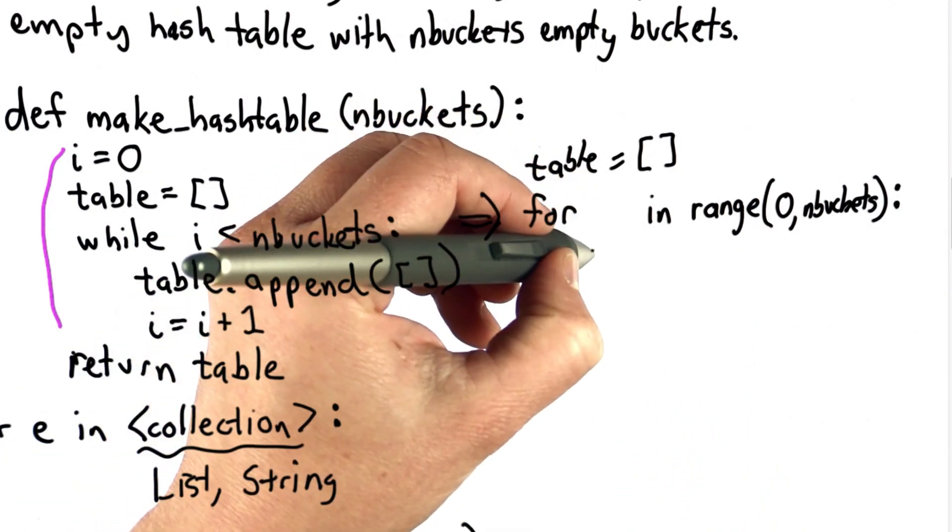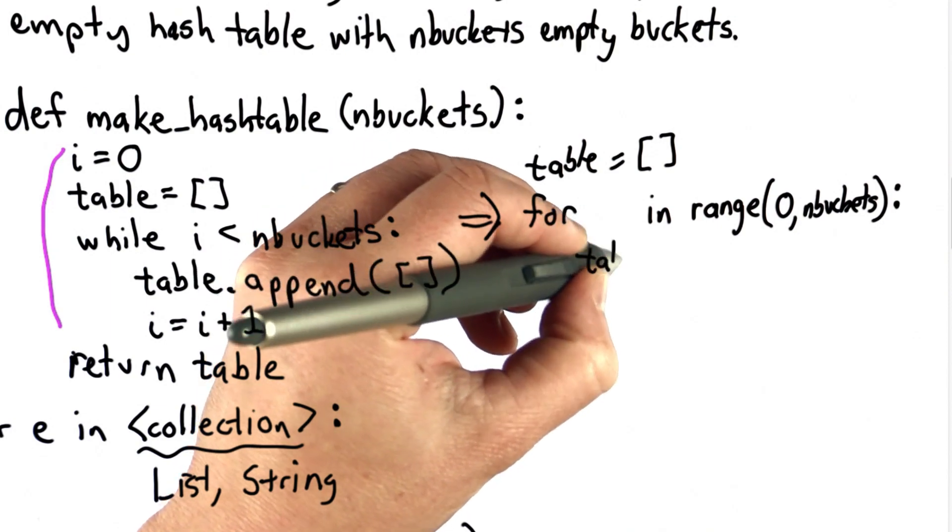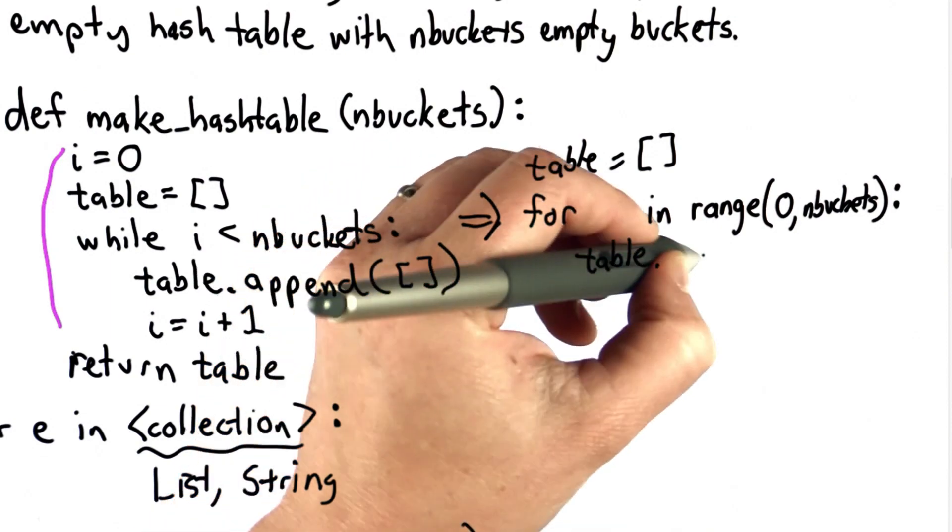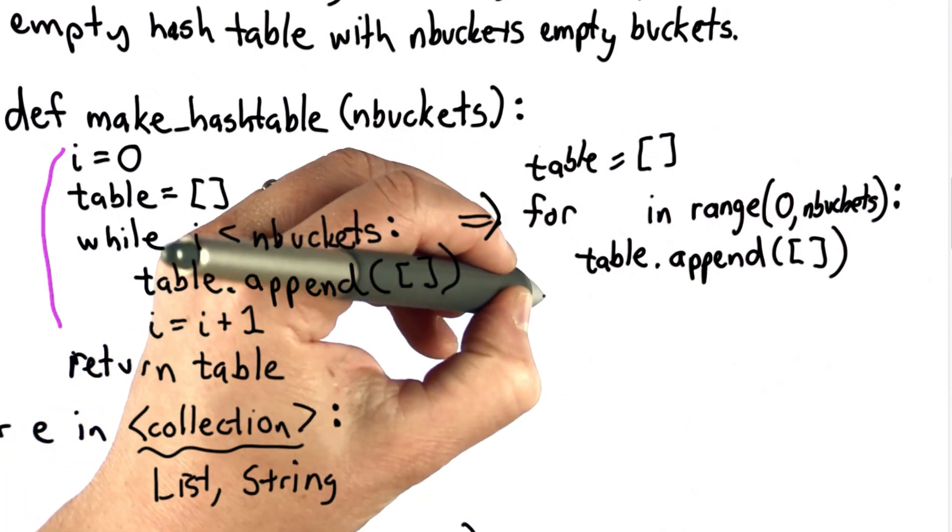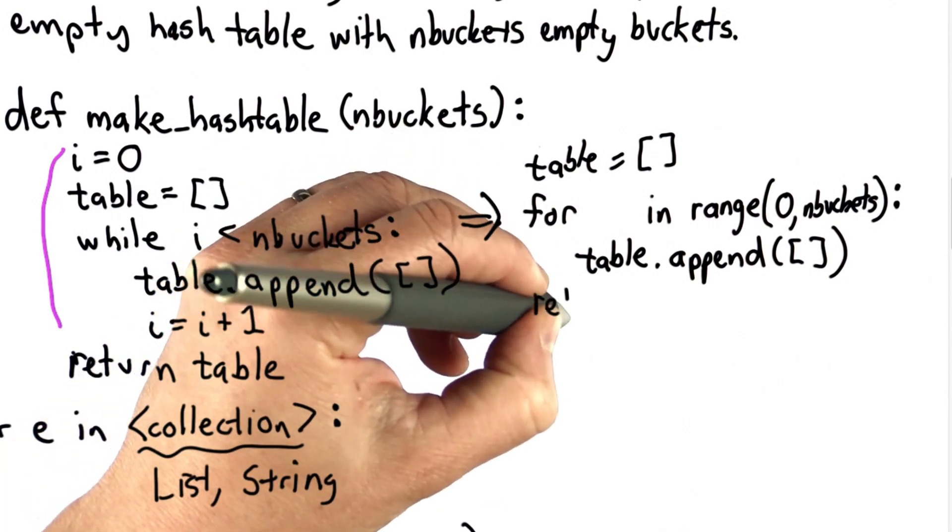And for each one of those, we want to append one new bucket to the table, just like we did before. We don't need to increment i. There's no i variable now. And at the end of the loop, we return the table just as before.